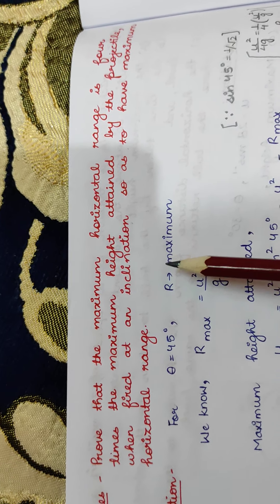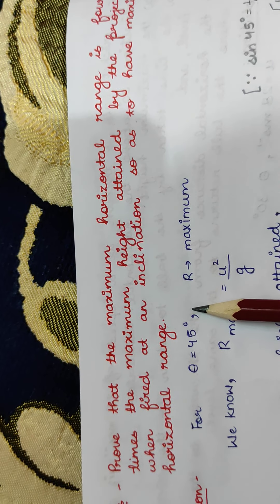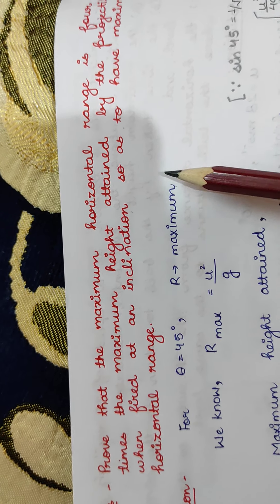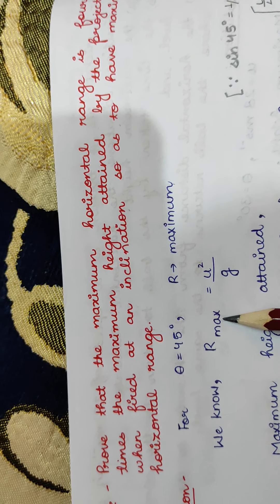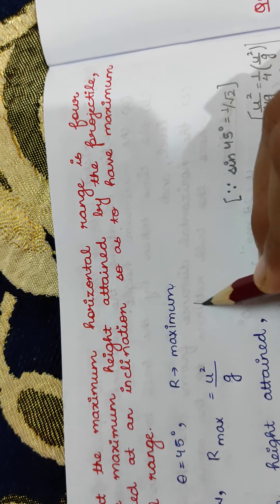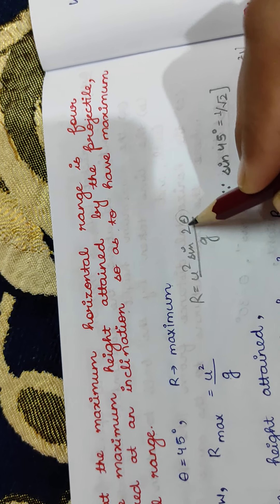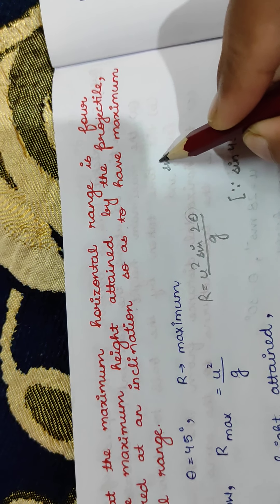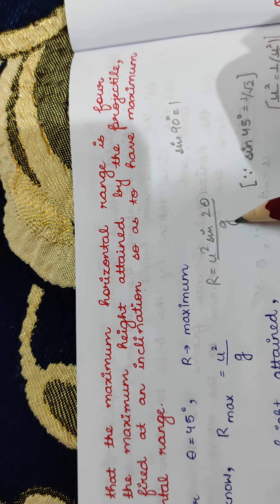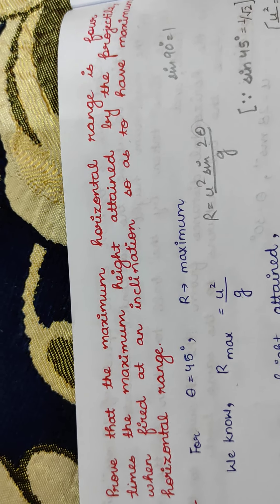We know that the horizontal range is maximum when θ = 45°. The formula for horizontal range is R = u² sin2θ / g. Putting θ = 45°, we get 2θ = 90°, and sin90° = 1. So this term disappears and we are left with R_max = u² / g.